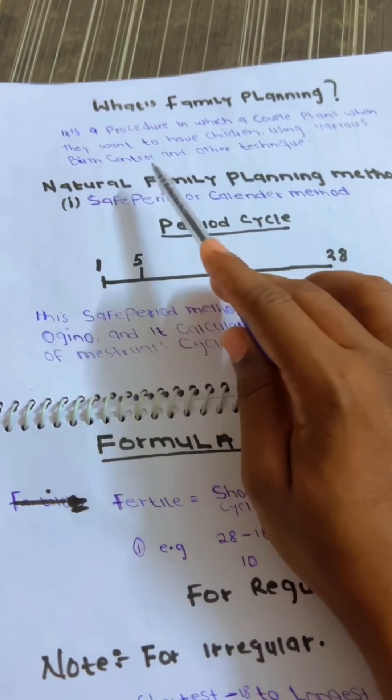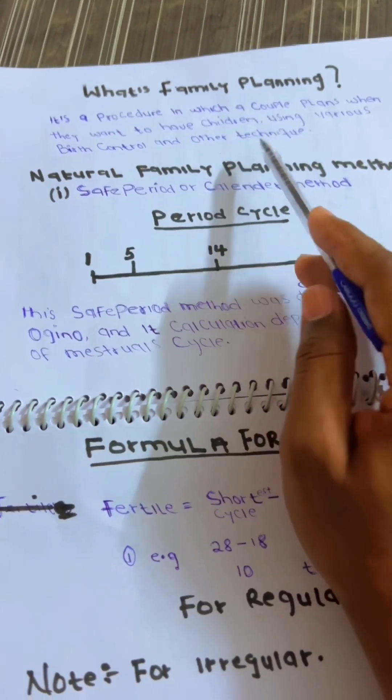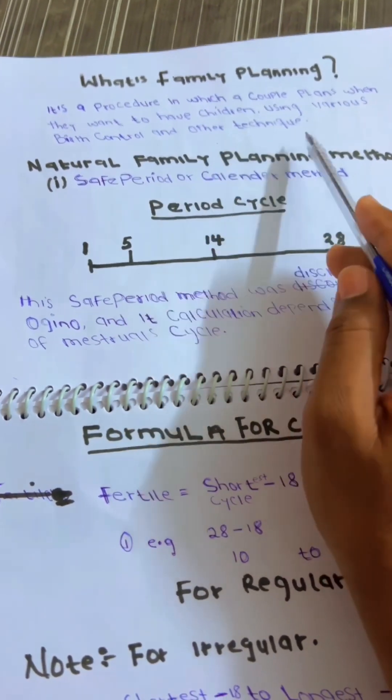So what is family planning? It is a procedure in which a couple plans for when they want to have children, using various birth control and other techniques.